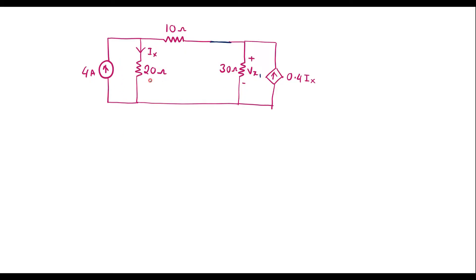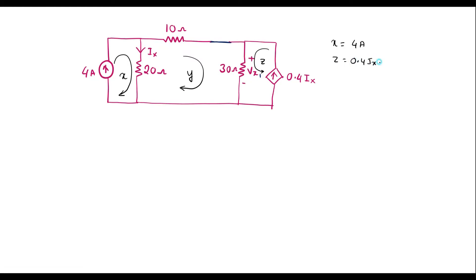Here we have three loops. In the first loop, the current is 4 amp. Let me assume the current in the second loop is x, in the third loop is y, and in the fourth loop is z. The current x is equal to 4 amp, and current z is nothing but 0.4 ix. Here, ix is the current which flows through the 20 ohm resistor, which is x minus y.